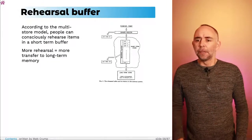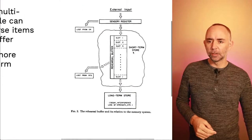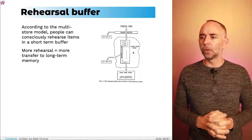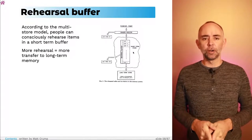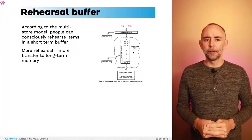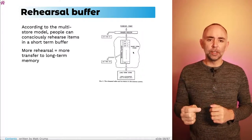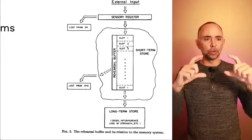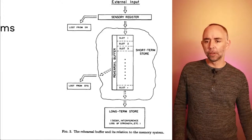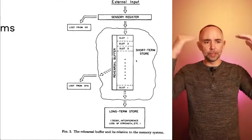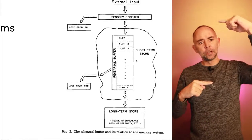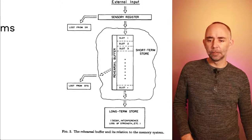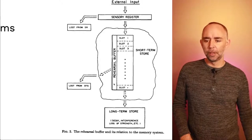We're going to focus on the short-term storage location. This is another diagram from their paper, and we're going to talk about the rehearsal buffer — one of the main ideas in the model. According to the multi-store model, people can consciously rehearse items in a short-term buffer, and the more you rehearse an item, the more likely you are to transfer that information to long-term memory. The rehearsal buffer has different slots — places you can put things you're trying to remember. The more you go over the list, the more likely each item gets transferred to the long-term storage location.